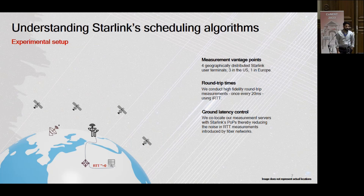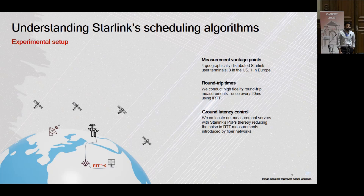Our experiment consists of four geographically distributed user terminals — three in the US and one in Europe. We conduct high-fidelity round trip measurements using a tool called IRTT, sending a UDP packet every 20 milliseconds. To control for ground latency, which is the fiber link from the POP to the end server that can introduce noise from the regular internet, we co-locate all of our measurement servers with Starlink's POPs.